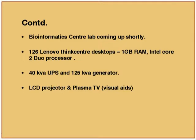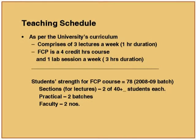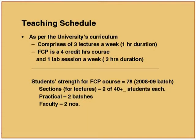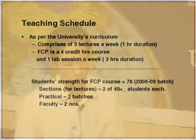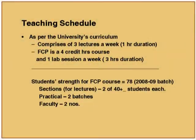We have LCD projectors and plasma TVs as visual aids. The course we are covering is called Fundamentals of Computer Programming. As per the university's curriculum, FCP is a four-credit-hour course comprising three lectures per week of roughly one hour each, and one lab session per week of three hours duration. The student strength in the second batch is 78 students, so we divide them into two sections of around 40 students each, with practicals in two batches and one faculty per section.